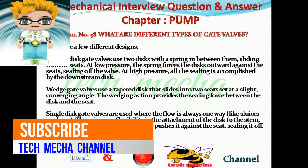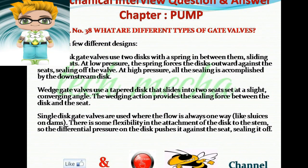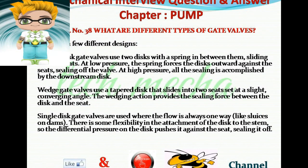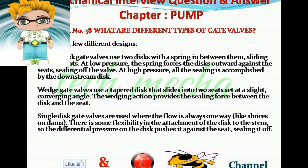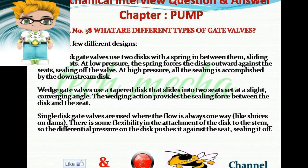Question number 38: What are the different types of gate valves? Answer: There are a few different designs. Parallel disc gate valves use two discs with a spring in between them sliding into the seats. At low pressure, the spring forces the discs outward against the seats, sealing off the valve. At high pressure, all the sealing is accomplished by the downstream disc. Wedge gate valves use a tapered disc that slides into two seats set at a slight converging angle; the wedging action provides the sealing force between the disc and the seat. Single disc gate valves are used where flow is always one way, like sluices on dams; differential pressure on the disc pushes it against the seat, sealing it off.